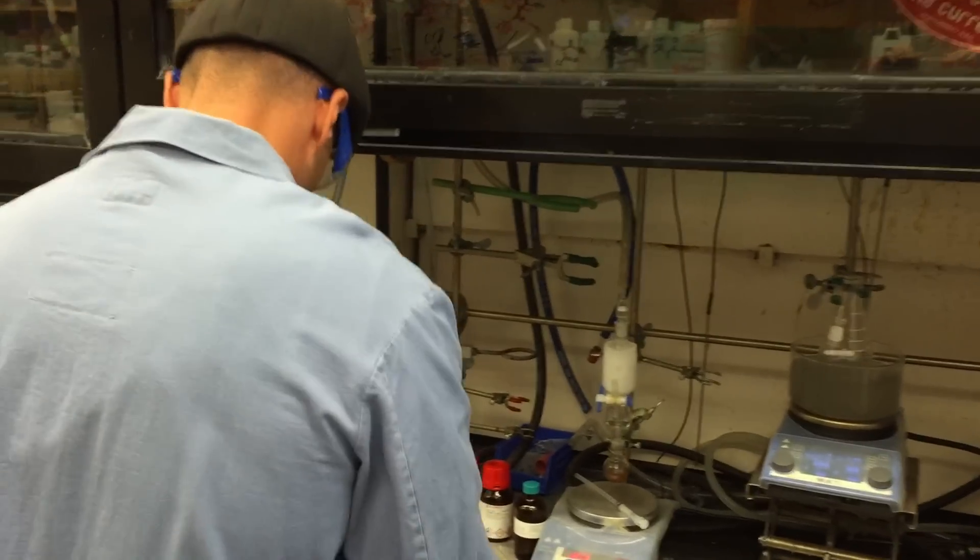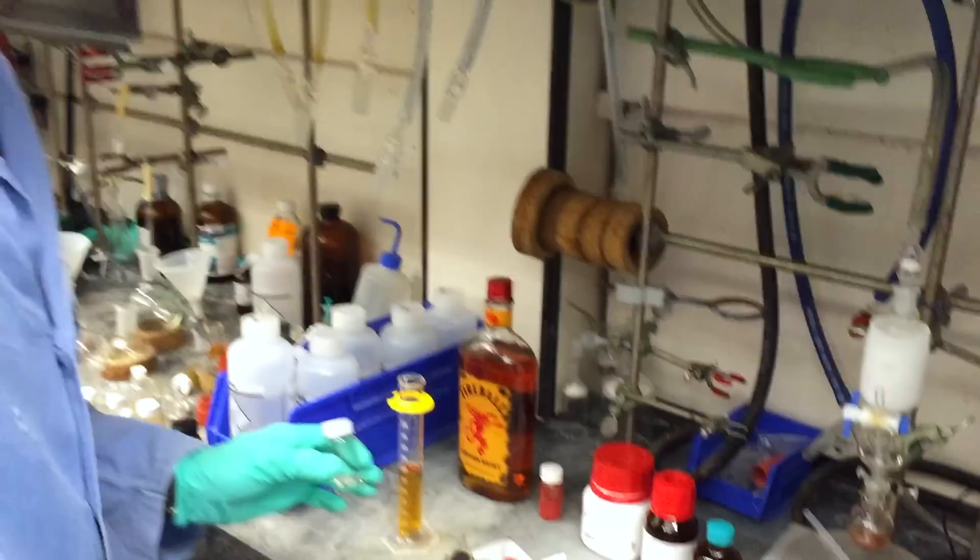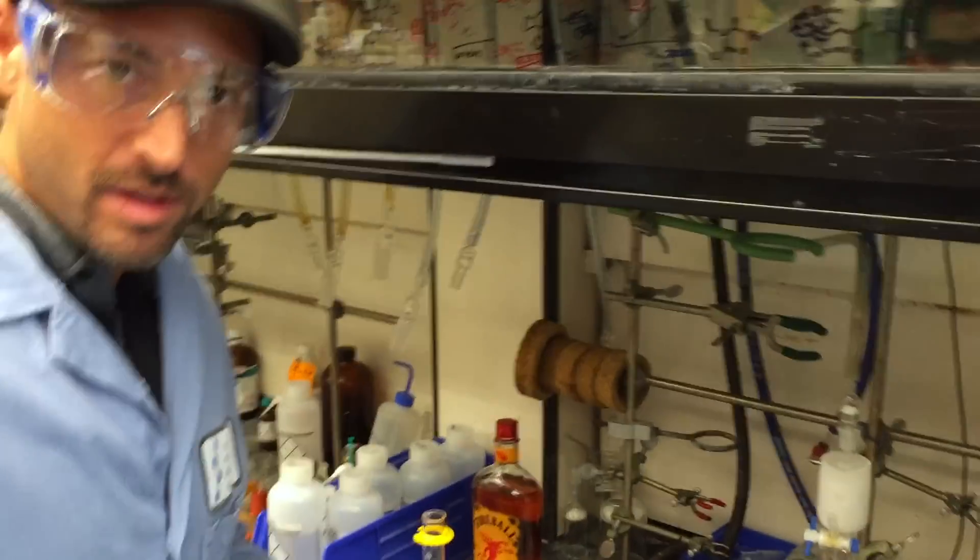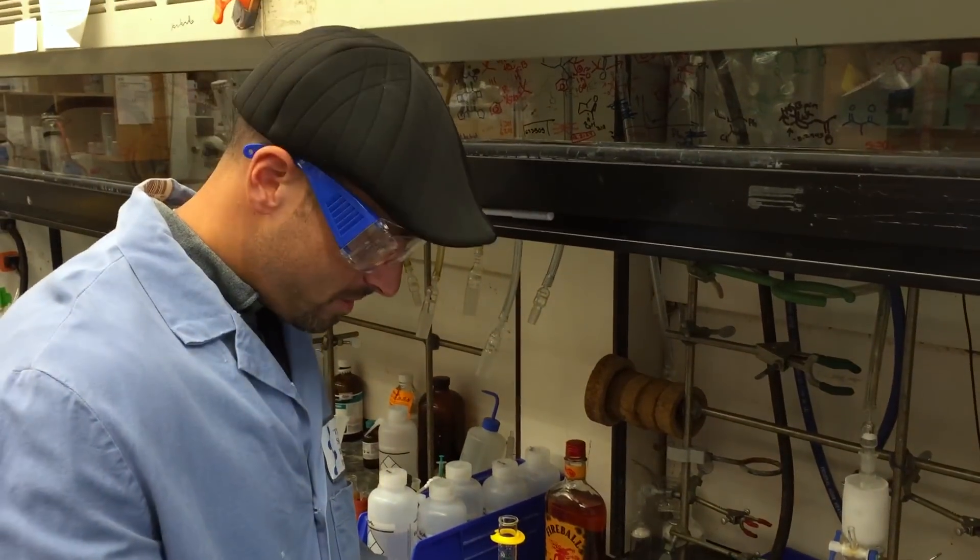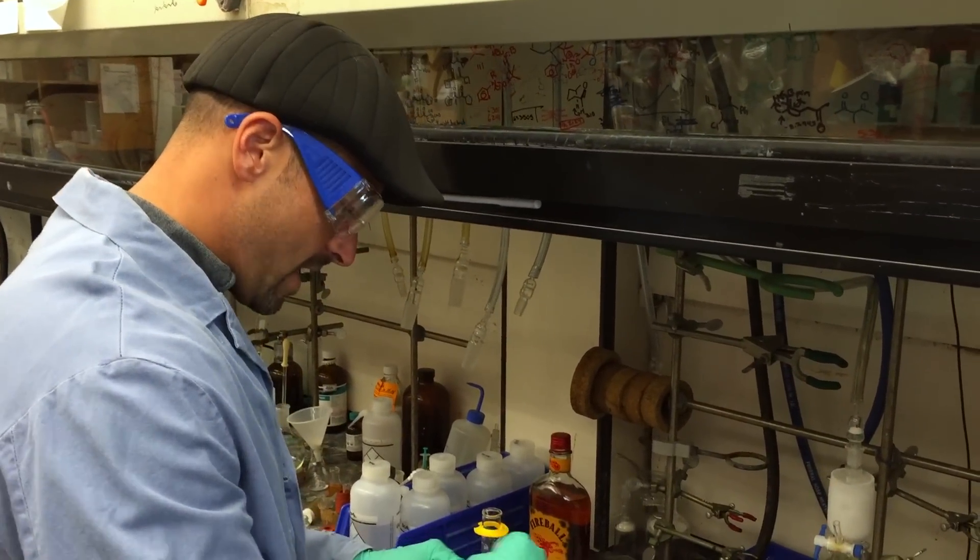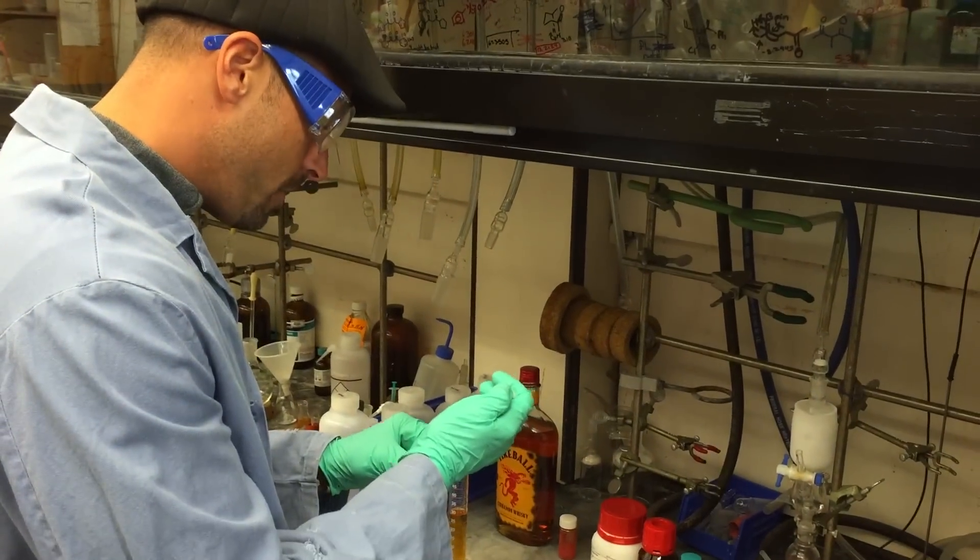So we need to measure out our substrate. And Julian is my sous chef, so he's done all the cutting and weighing out. So all I have to do is measure things out and add them to an Erlenmeyer flask.